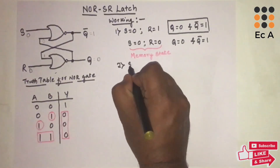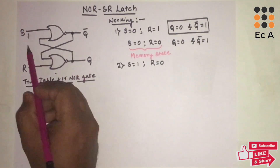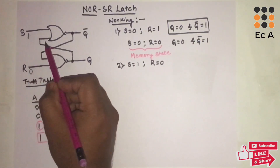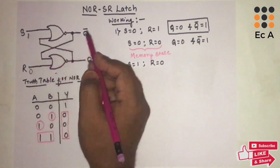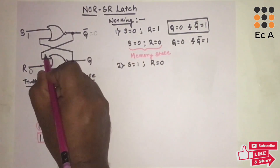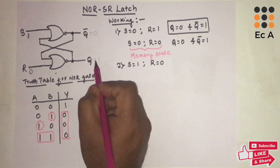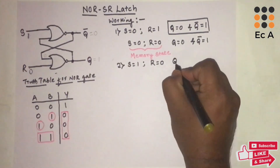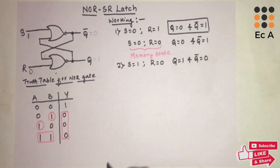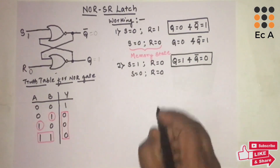Now let us make S=1 and R=0. Since S=1, irrespective of the other input, the output of the first gate will be zero, so Q-bar equals zero. This zero feeds back to the second gate, giving input 0-0, so the output is one. We get Q=1 and Q-bar=0.